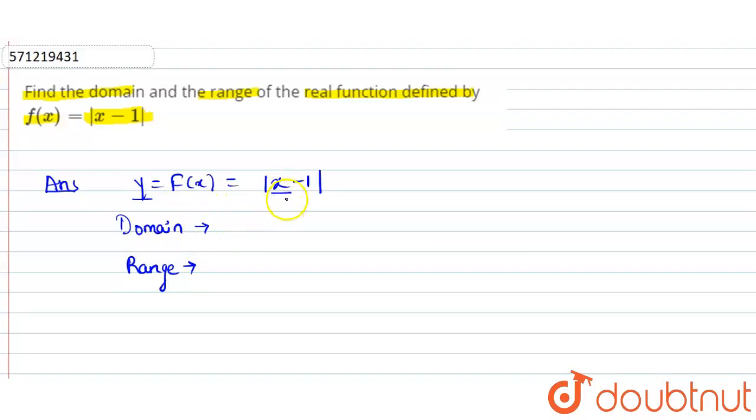So, for the value of x, as you can see, we have x in the mod. So, I can write that we can put any value from minus infinity to plus infinity in this x and I will get some value of y.